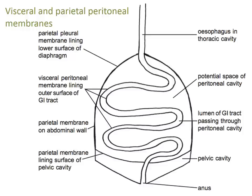Abdominal organs suspended in the mesenteric folds of the peritoneum are described as intraperitoneal — for example, the large and small intestine are mostly intraperitoneal. Other abdominal organs outside the peritoneal cavity, often covered by peritoneum over only one surface, are described as retroperitoneal. For example, the pancreas and kidneys are behind the peritoneal membrane, so they're retroperitoneal.